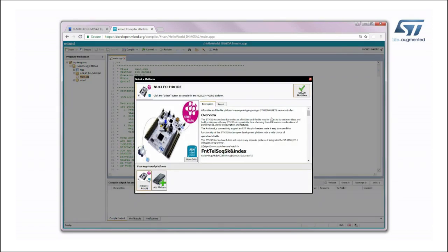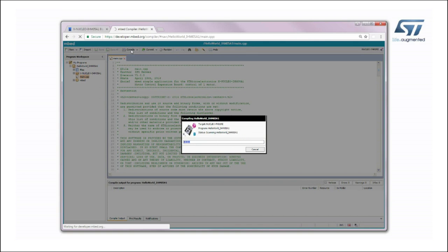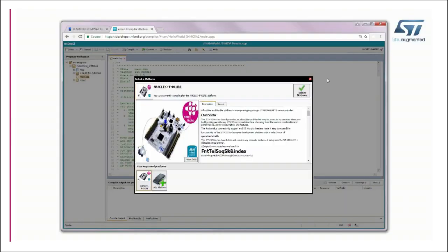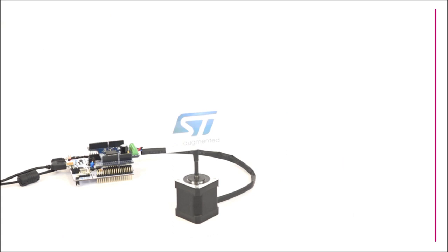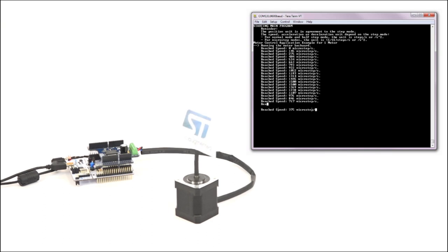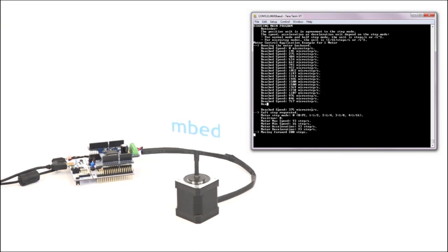Add a new platform if needed. At this point, build the application and download it onto the Nucleo board. After completing the download, or when pressing the black button on the Nucleo board, the application will reset and start. This simple application shows how to run the bipolar stepper motor at different speeds.